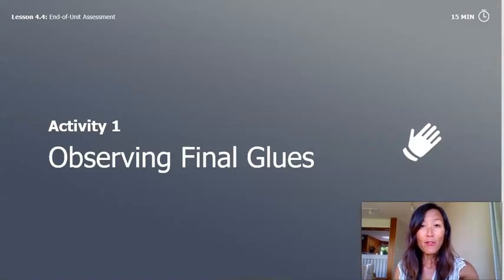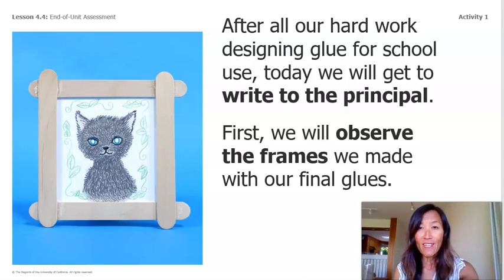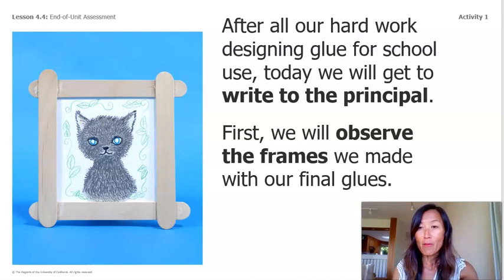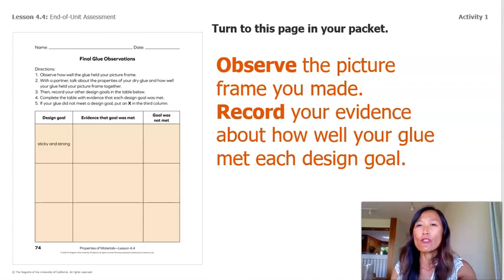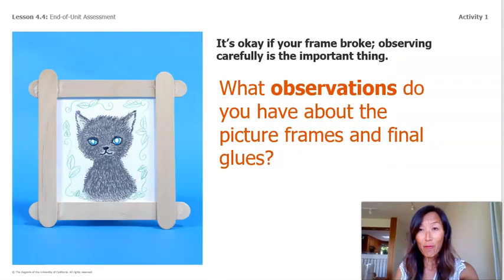Activity 1: Observing Final Glues. After all our hard work designing glue for school use, today we'll get to write to the principal. First, we will observe the frames we made with our final glues. Remember, you guys did this from your last lesson. Pick up your picture frames gently to observe them. Most picture frames will break if you apply a lot of pressure, so be gentle.